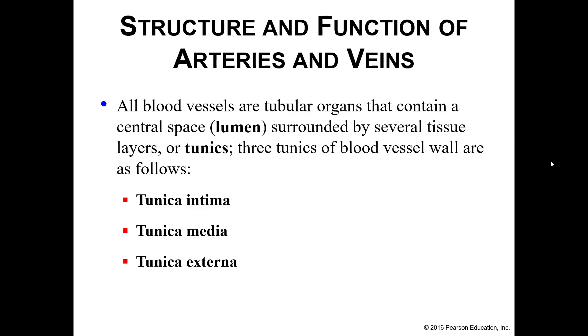Your blood vessels are basically just long tubes. These tubes have a center space — we call this the lumen — and the lumen is surrounded by several tissue layers, we call these tunics.